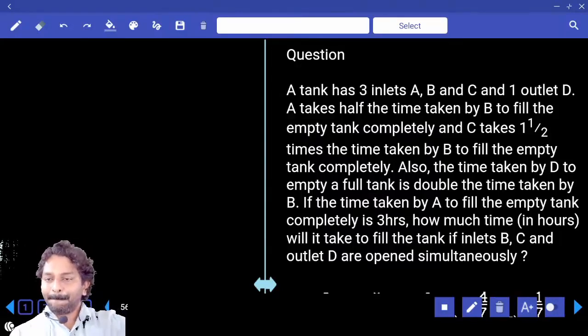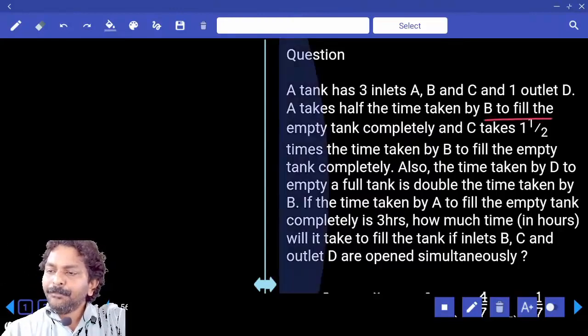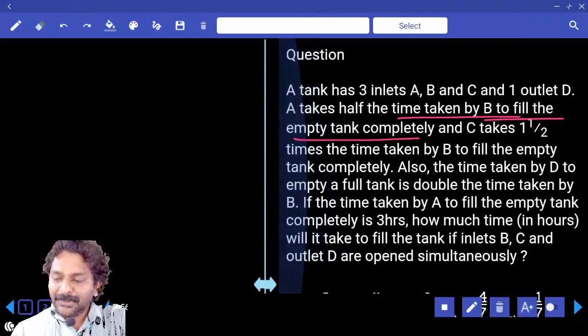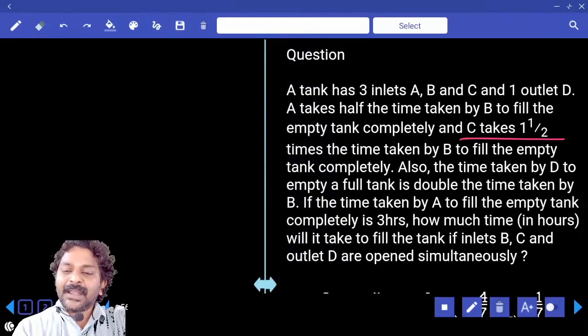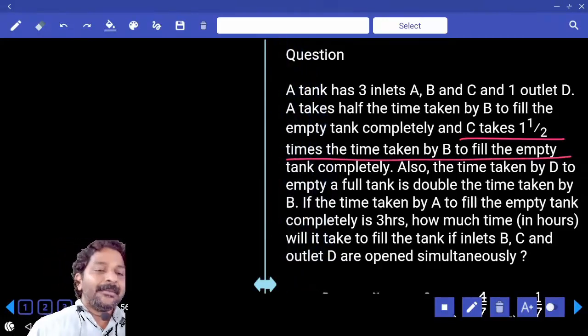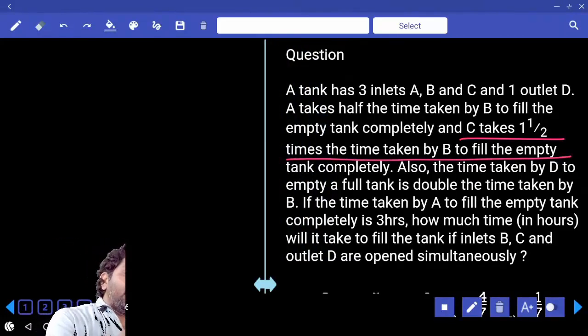The time taken by B to fill the empty tank completely... and C takes one and a half times the time taken by B to fill the empty tank. One and a half times of 2x, how much is that? 3x.